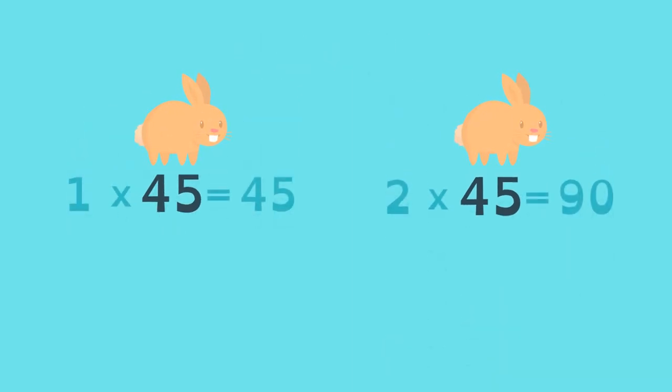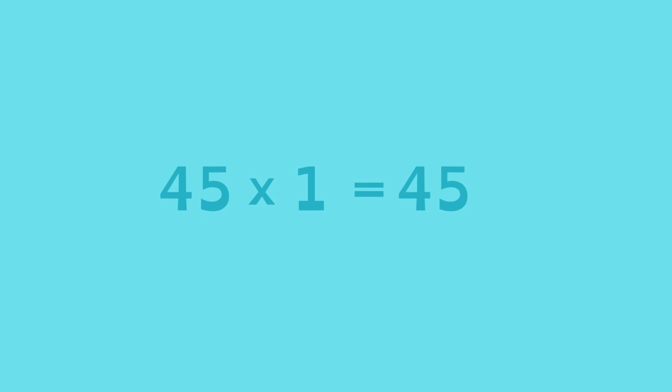He can feed 45 rabbits one piece of broccoli and two carrots each. In other words, there are 45 groups of one in 45 and 45 groups of two in 90.